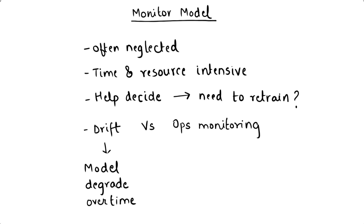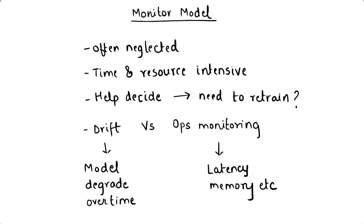Performance changes can manifest in different ways — specific features may take values outside the range of the training data, or there may be a general drift in the distribution of values across the data set. Because of this tendency for models to degrade, model quality must be monitored to decide if retraining is needed. Operational monitoring looks at things like serving latency, memory and CPU usage, throughput, and system reliability. Data scientists and machine learning engineers review logs and metrics on an ongoing basis, using tools like Kibana and Prometheus for searching logs and monitoring metrics.